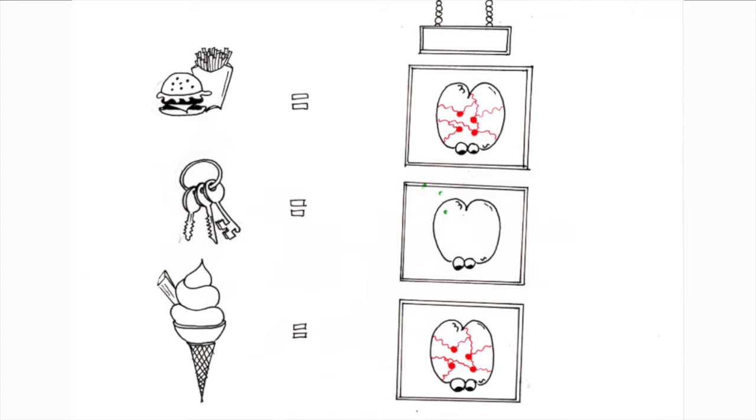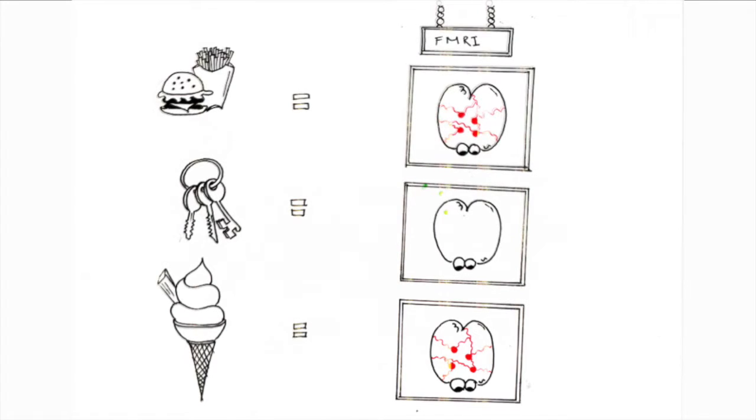Reward systems are activated when palatable food pictures are shown to normal and overweight people. We can then see which reward centres in which specific parts of the brain receive more blood flow when a picture of palatable food is shown.